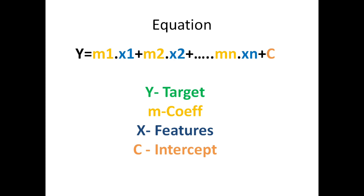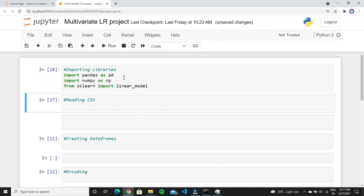Let's move to the script. Here you can see the equation of multivariate regression. In linear regression you can only work with a single feature, but this equation is used to add n number of features to your model. Here, y is our target variable that depends on x; x is our feature variable; m is the coefficient of x; and c is the intercept. These two variables — m and c — help you to tune the performance of the machine learning model.